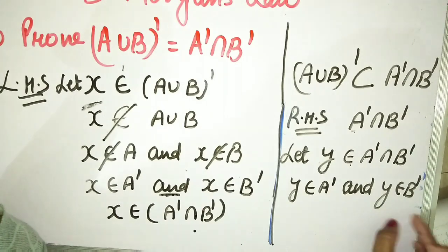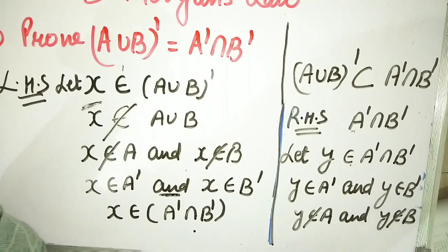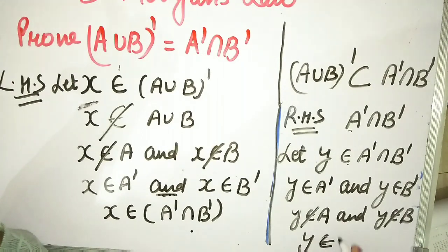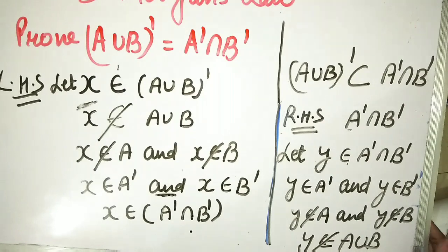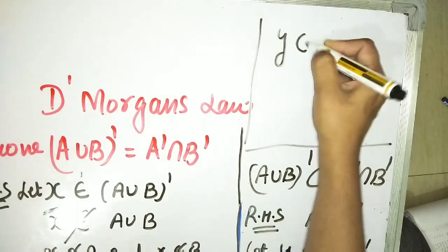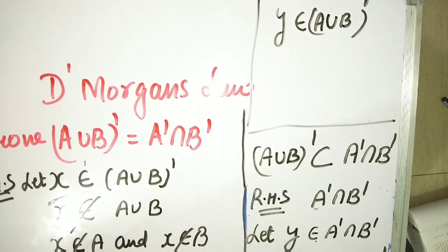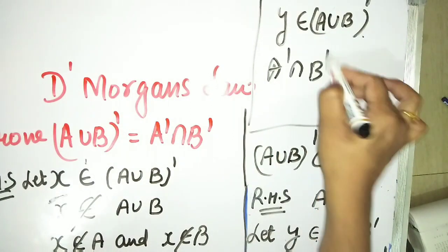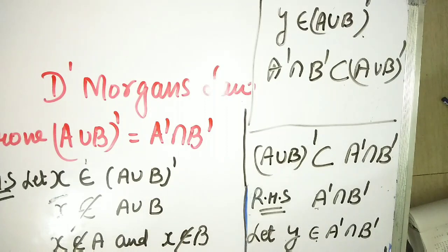So y belongs to A complement and y belongs to B complement. This means y doesn't belong to A and y doesn't belong to B. If y doesn't belong to A and doesn't belong to B, then y doesn't belong to A union B. Therefore, y belongs to A union B complement.